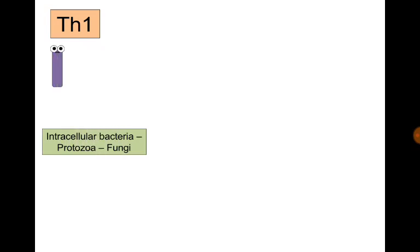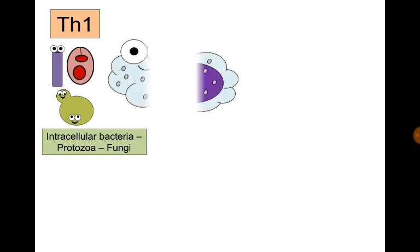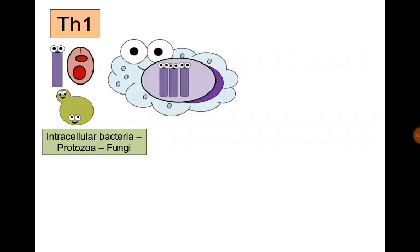The first pathway is T-helper 1. T-helper 1 is activated by intracellular bacteria like Mycobacterium tuberculosis or Mycobacterium leprae, protozoa like Leishmania or Trypanosoma, and fungi. They are phagocytosed by macrophages, which internalize them inside a phagosome, digest them, and show some of their antigens on the surface attached to MHC class 2 molecules.